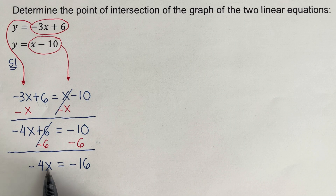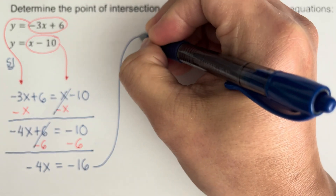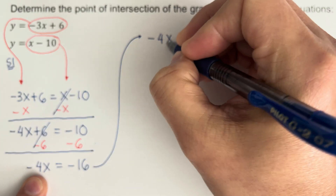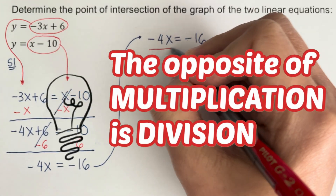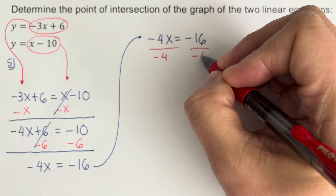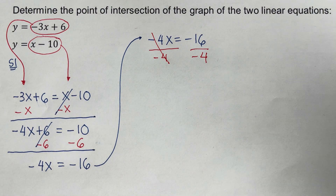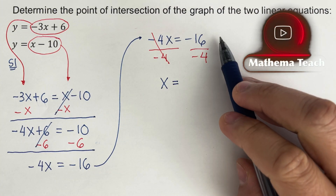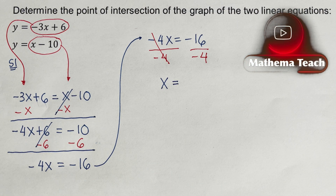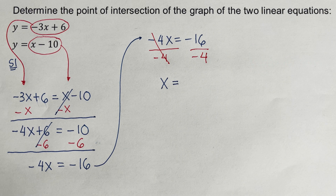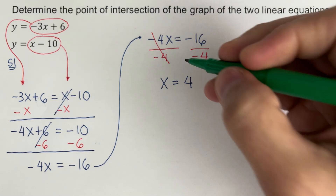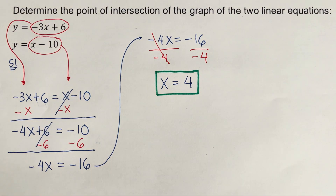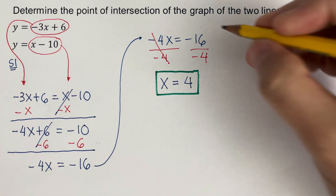So we have negative 4x equals negative 16. The opposite of multiplication is division, so I divide both sides by negative 4. That leaves x equals negative 16 divided by negative 4. Two negatives divided by each other give a positive, so x equals positive 4. That is the value of x, and we're ready for Step 2.